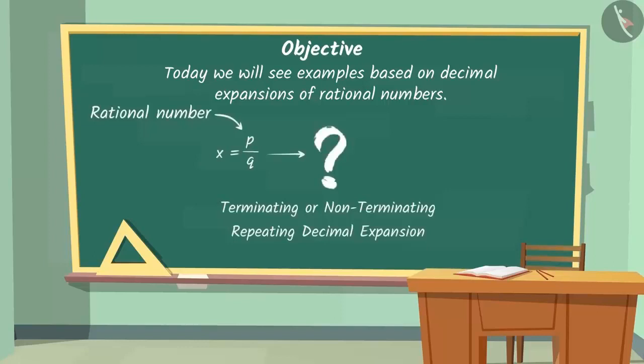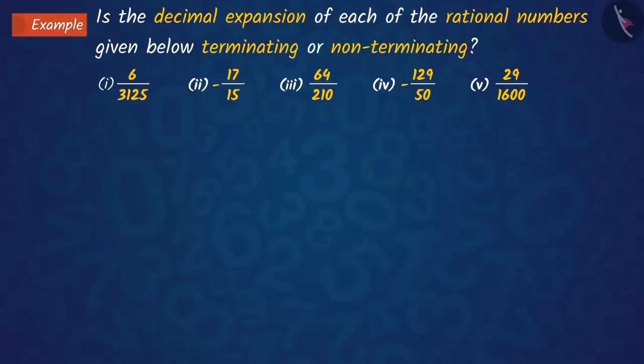Now, we will see an example based on it. Here, without using division, we have to tell which rational numbers have a terminating decimal expansion and which ones have non-terminating decimal expansion.